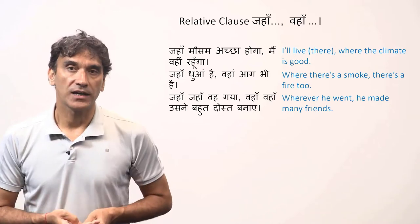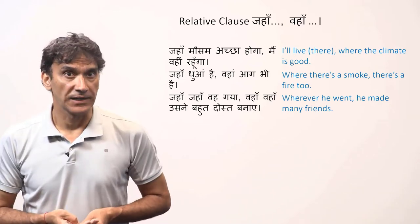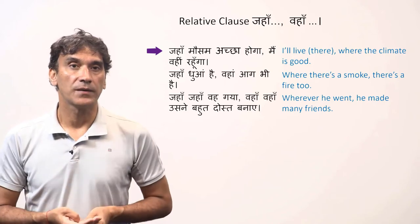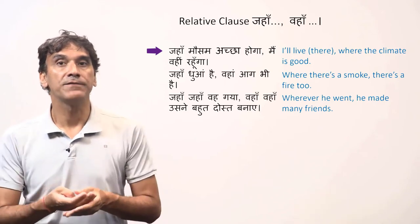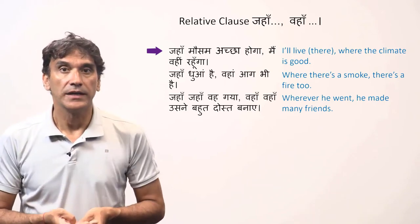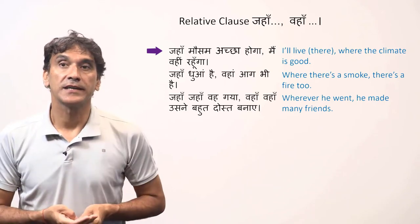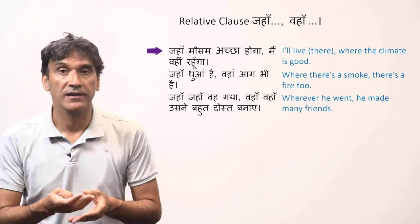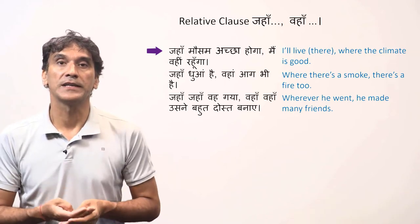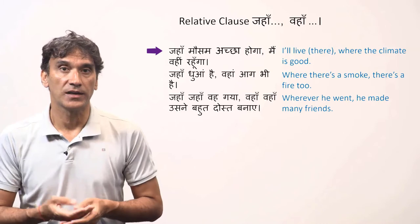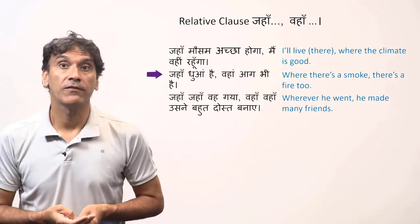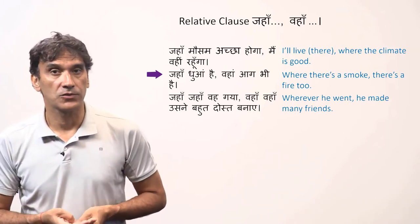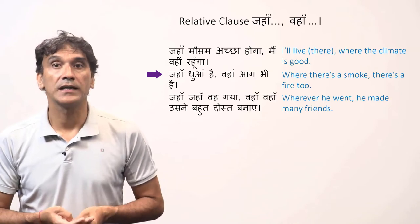Let's start with jaha. The relative word is 'where' in English. For example: 'I live there where the climate is good.' The word 'where' here is not a question — it is a relative word. In Hindi, jaha is used similarly: 'where there is smoke, there is fire too.'